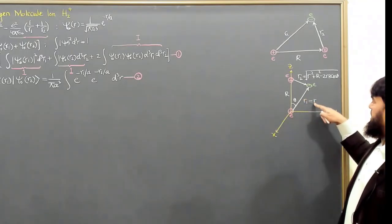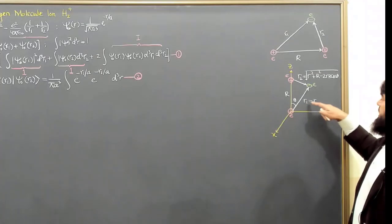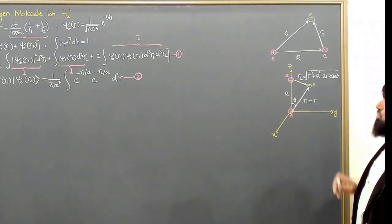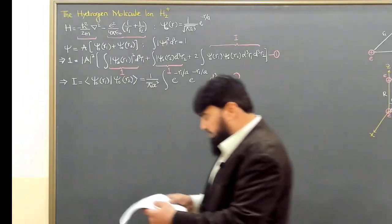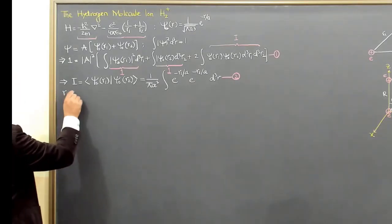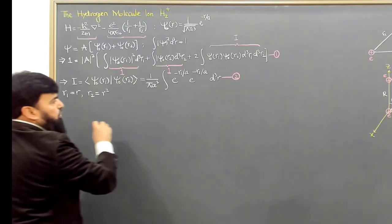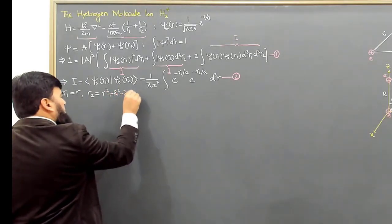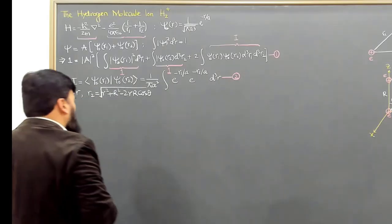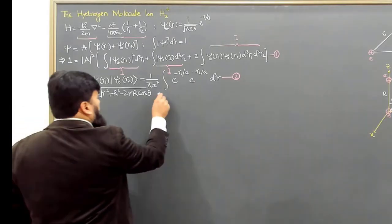R2, based on this assumption, will become — keeping R along the z-axis — from the law of cosines: R2 squared equals small r squared plus capital R squared minus 2rR cosθ, where θ is the angle between them. So we will utilize the law of cosines and R2 will come out to be this.